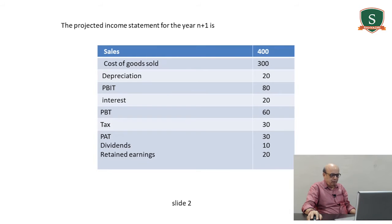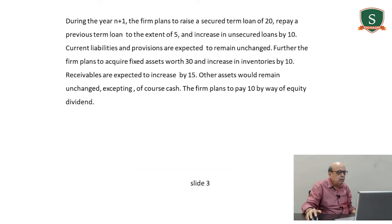The projected income statement for year N+1: sales 400, cost of goods sold 300, depreciation 20, profit before interest and tax 80, interest 20, profit before tax 60, tax 30, profit after tax 30, dividends 10, retained earnings 20. Now you are given the adjustments during year N+1.